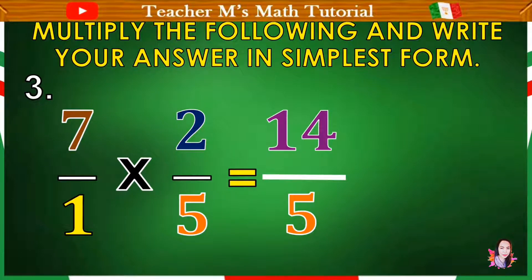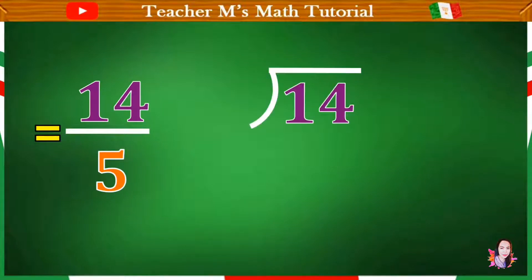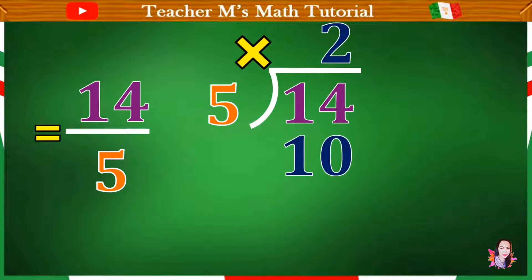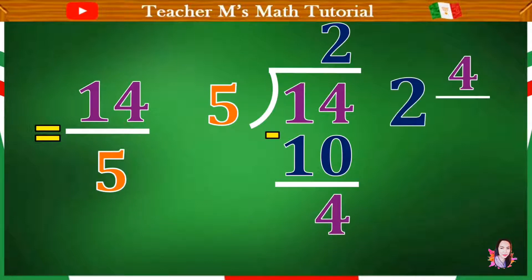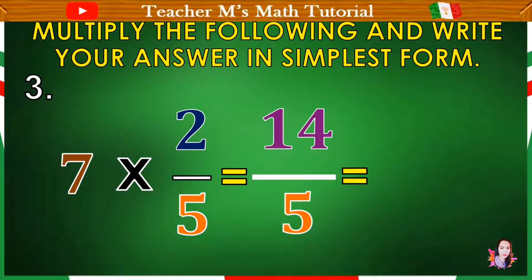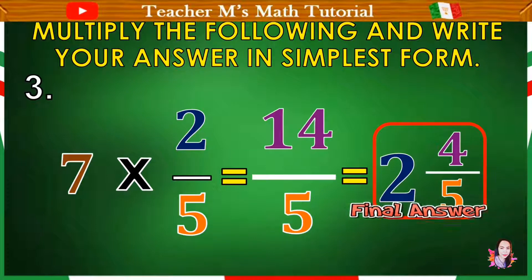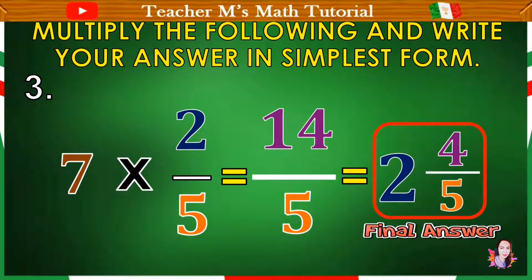So we have 14 over 5. Now, it is improper fraction. Ibig sabihin mas mataas yung numerator kesa sa denominator. Pwede natin itong isulat in mixed number by dividing 14 by 5. 14 divided by 5 is 2. 2 times 5 10. And then 14 minus 10 equals 4. Then 4 will be the numerator and 5 will be the denominator. We have 2 and 4 over 5. It means that 14 over 5 is equal to 2 and 4 over 5. Depende sa instruction. Pero kung wala naman nakalagay na specific na form, pwede ang final answer ay mixed number or improper fraction. So wala ang problema dun.